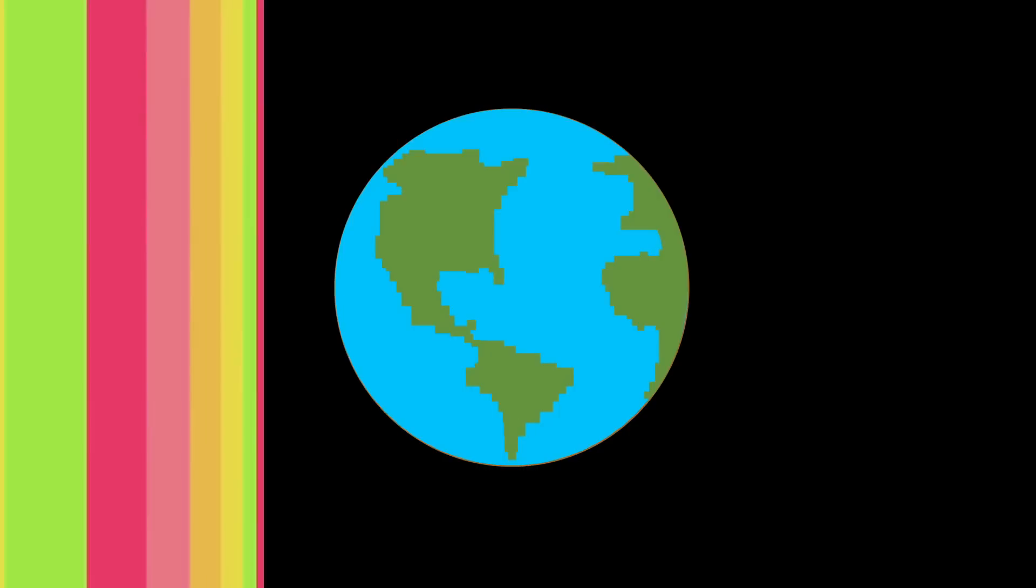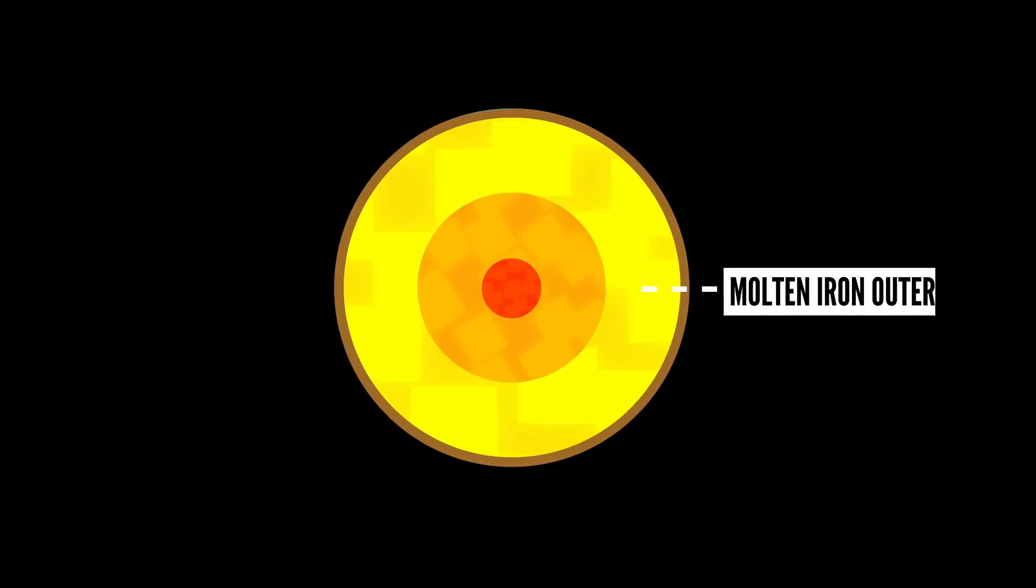Oh, look at that poor pigeon go. But why does this reversal happen in the first place? Well, the reason that Earth even has a magnetic field has to do with the molten iron in the outer core.